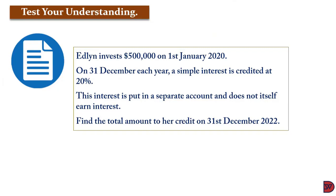Let's test our understanding. Edlin invests $500,000 on 1st January 2020. On 31st December each year, a simple interest is credited at 20%. This interest is put in a separate account and does not itself earn interest, meaning it's simple interest. Find the total amount to her credit on 31st December 2022.